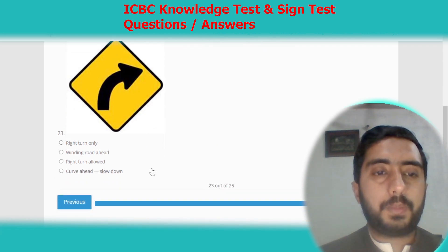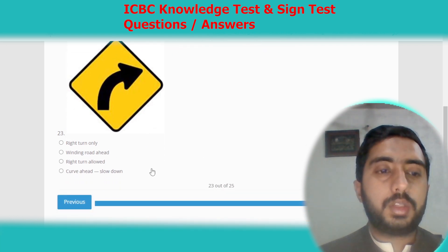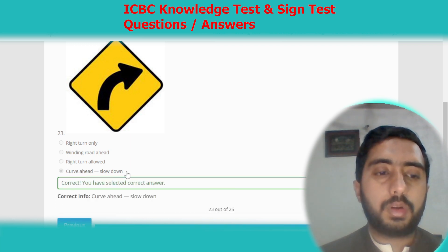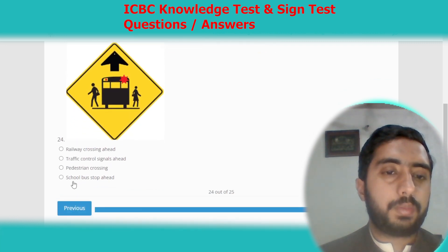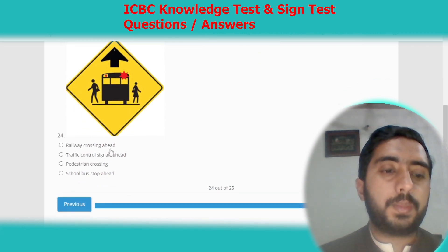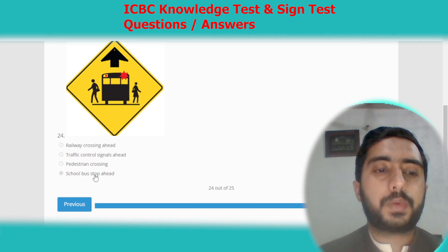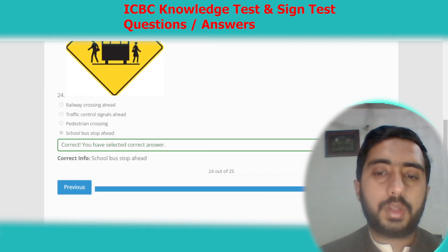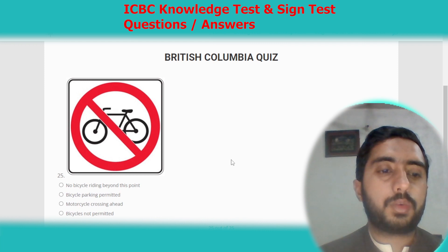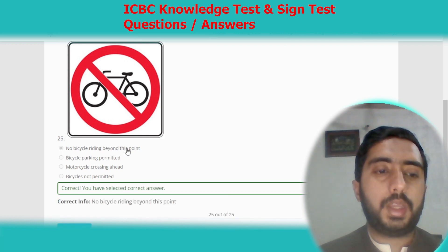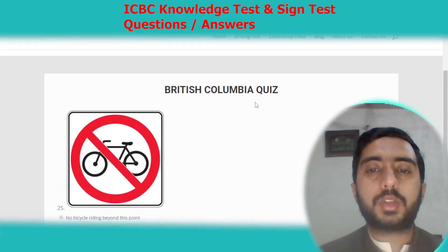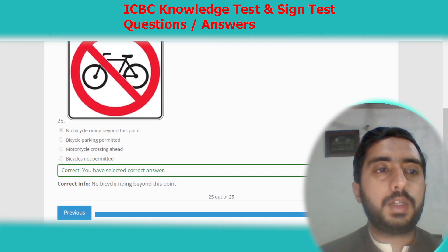Symbol twenty-three represents curve ahead, slow down. Symbol twenty-four represents school bus stop ahead. Option D. Symbol twenty-five represents no bicycle riding beyond this point. Option A. British Columbia sign test number two is also completed.